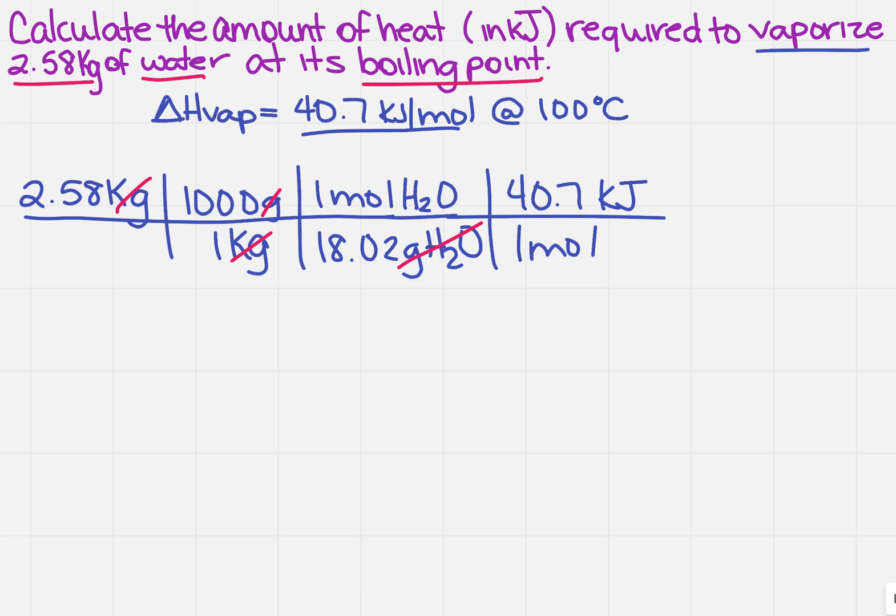Now I noticed that the moles cancel. I'm left with the units that I want, which are kilojoules. So you just do this on your handy dandy little calculator. Hopefully you should get 5827. Now, how many significant figures do we want? Well, 2.58 has 3.